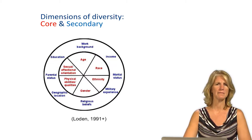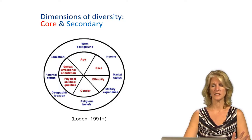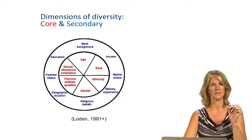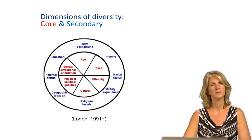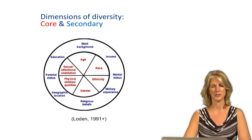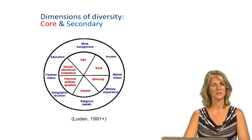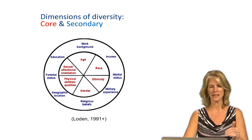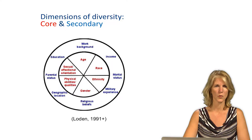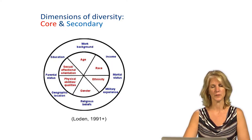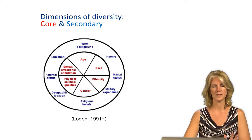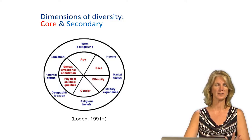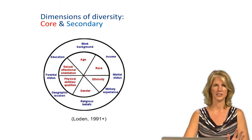Visitors differ on many dimensions. This diversity wheel illustrates six core dimensions of diversity: age, race, ethnicity, gender, physical ability, and sexual orientation and attraction. It also includes several secondary dimensions that all influence preferences for and evaluation of a recreation experience, among other perceptions and behaviors. Some of the most frequently researched dimensions include the socio-demographic variables of income, age, and gender.